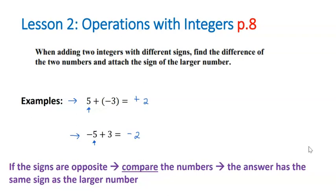So if the signs are opposite, if you have different signs, you're going to compare the numbers. You're actually going to subtract them, and you're going to keep the sign of the greater number.